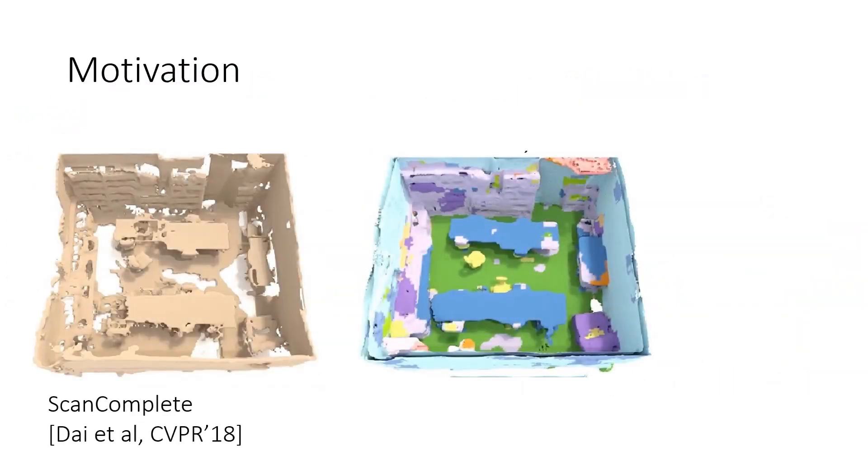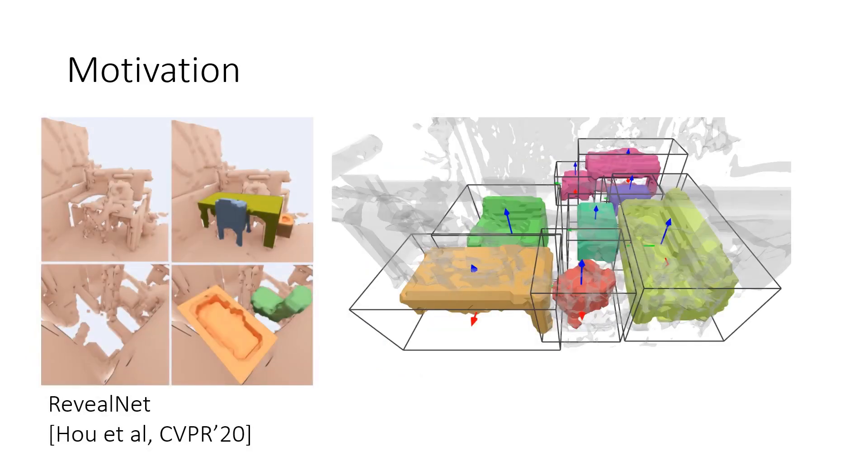To predict the missing geometries during scanning, previous works often convert the input scans into voxels, TSDFs, or bird-eye images, and resort to grid-based convolutions for scene completion.